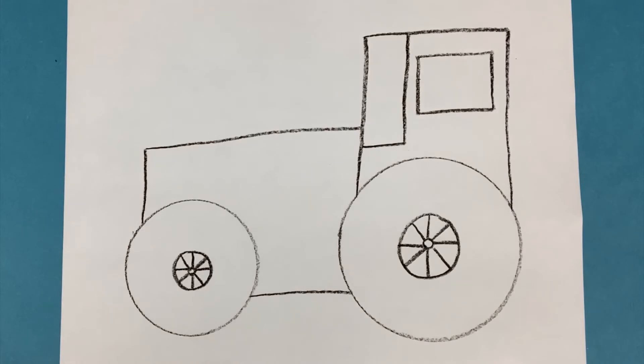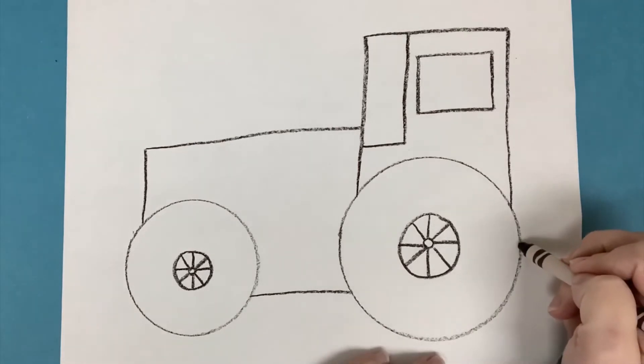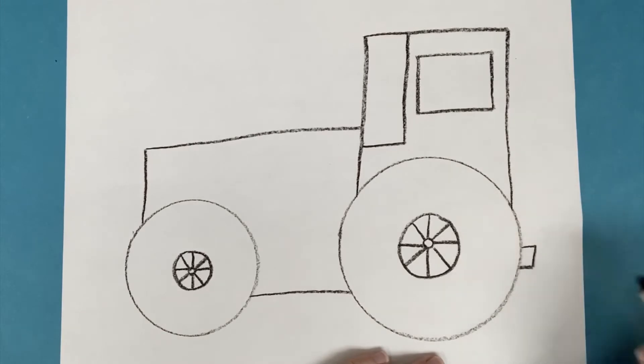All right, now we're going to add some other details. Let's add a little exhaust pipe coming off here. It's going to be a very small little square shape, rectangle shape.